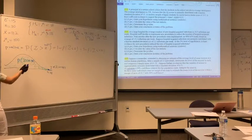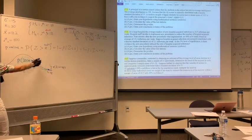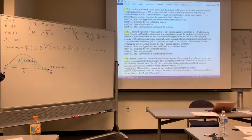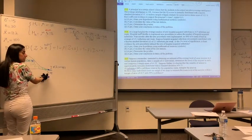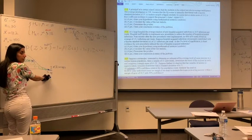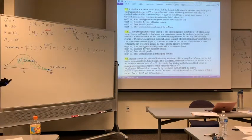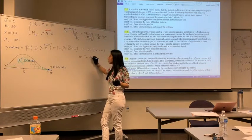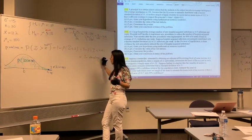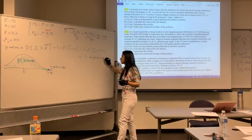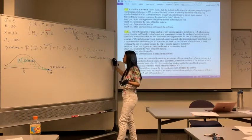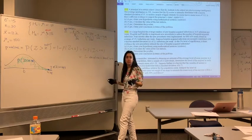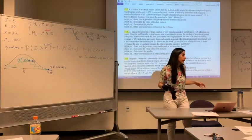This area is almost one. If you look at the table, you can't find 4.38, but you know that as z increases to a large number, the cumulative area also increases to almost one. So we write: one minus almost one equals almost zero. This is the p-value.